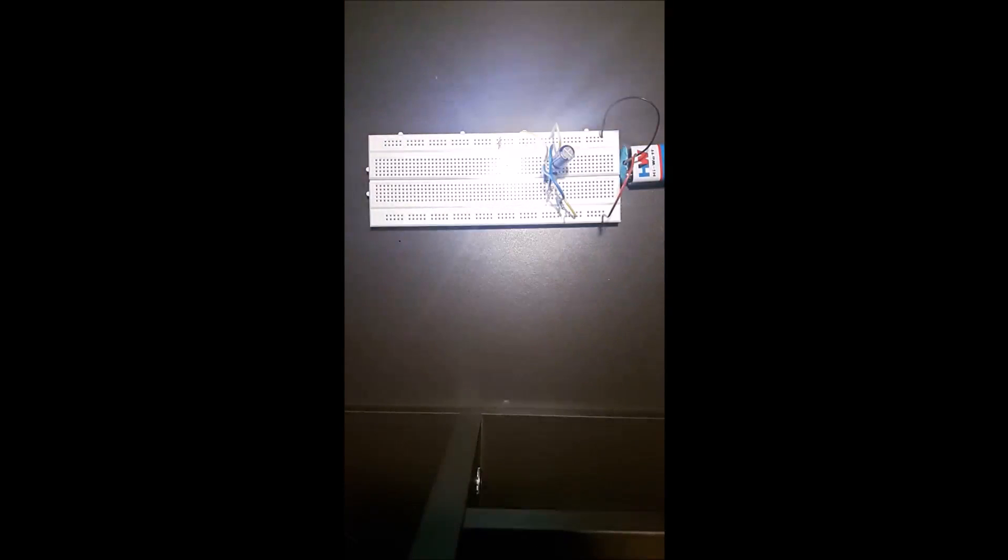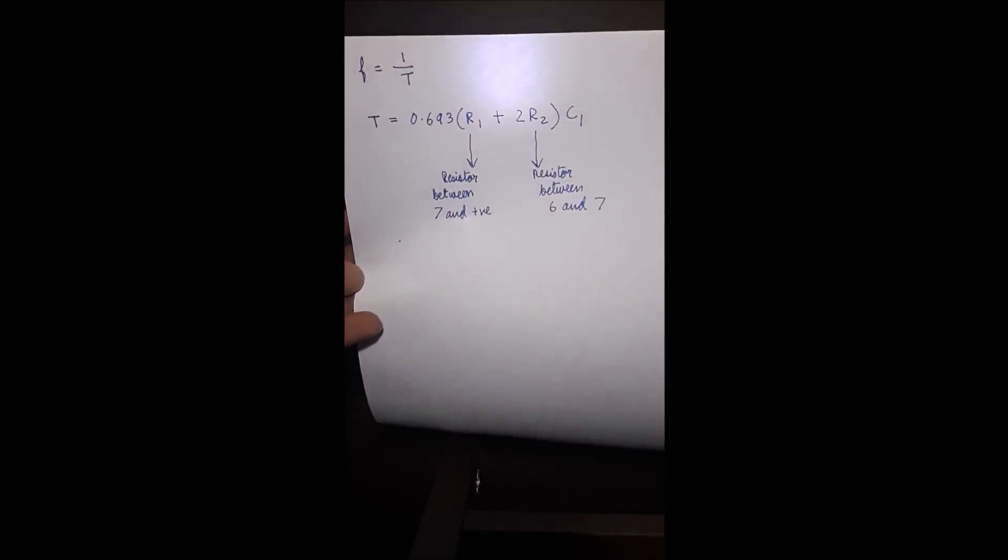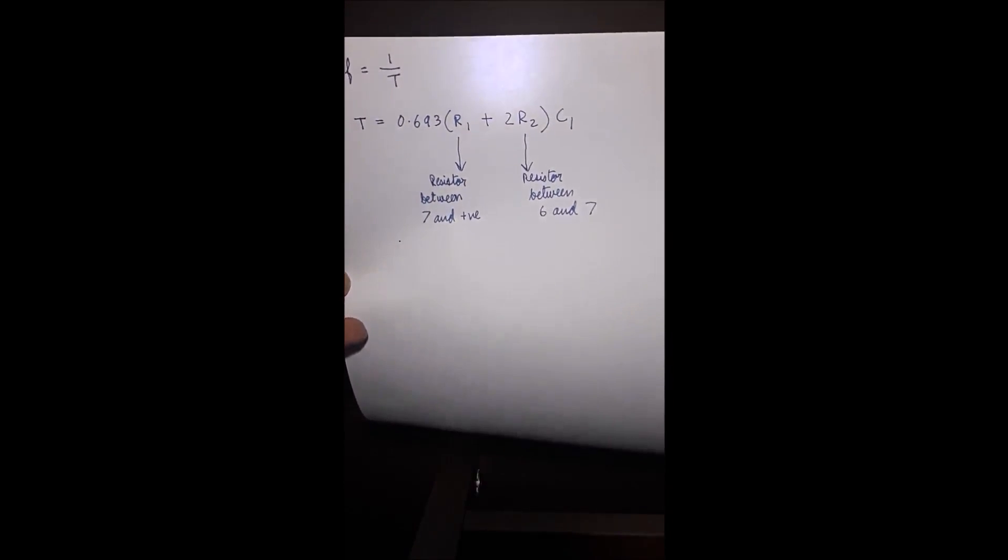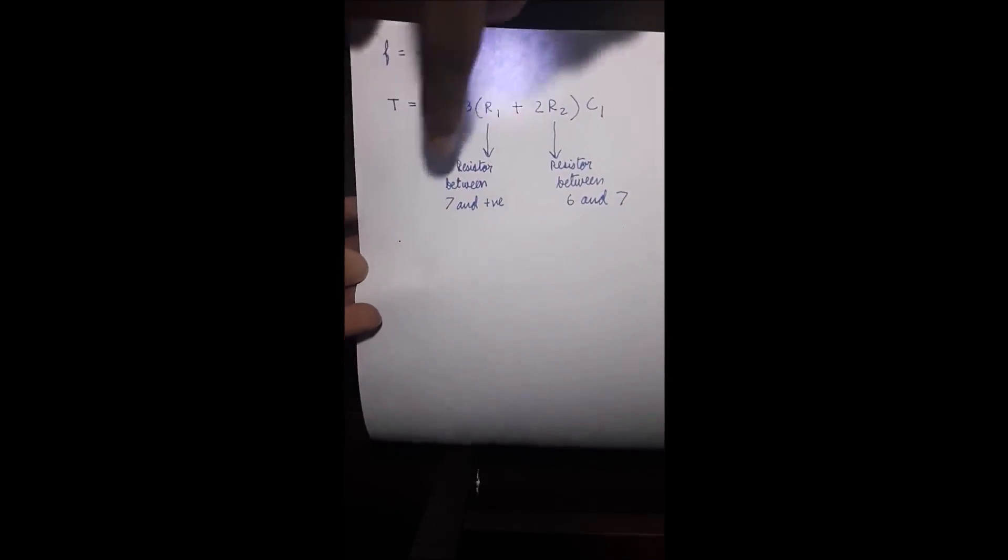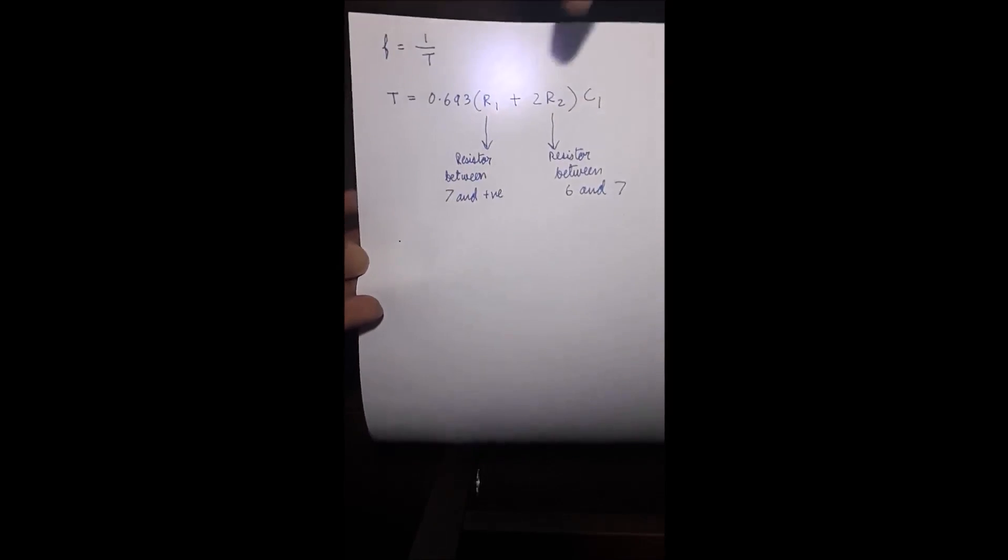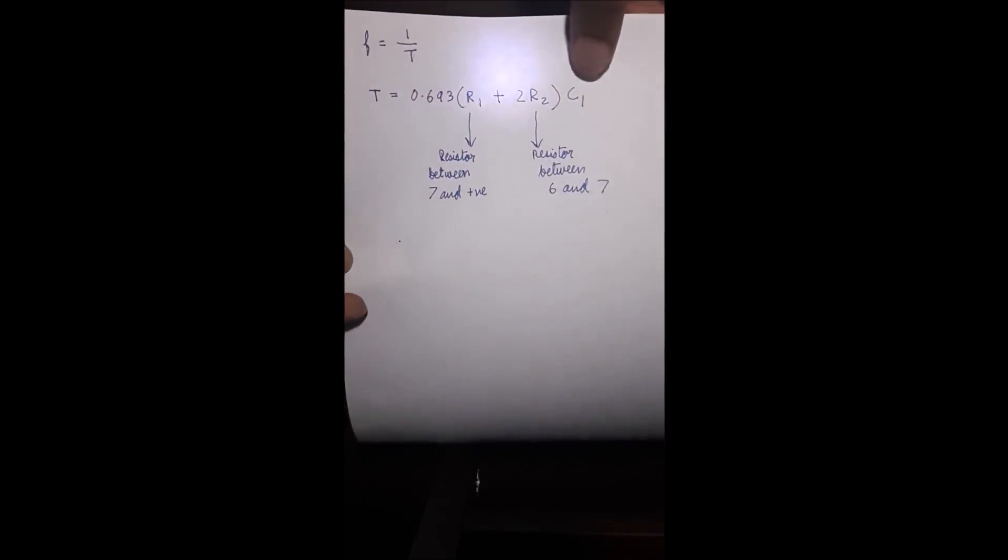You can change the frequency of the pulse using this formula: T (time period) equals 0.693 into R1 plus 2R2 into C1. Here R1 is the resistor between 7 and positive voltage, R2 is the resistor between 6 and 7, and C1 is the capacitor.